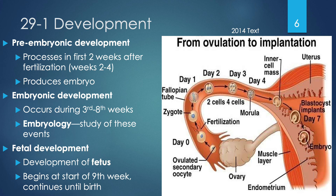The embryonic period is when we're developing all of our organs, occurring between the third and eighth weeks — a period of great change. Embryology is a field of study that looks specifically at this third through eighth week period. Fetal development is how we develop a fetus from the embryo — the period of maturation starting at the ninth week and continuing until delivery.